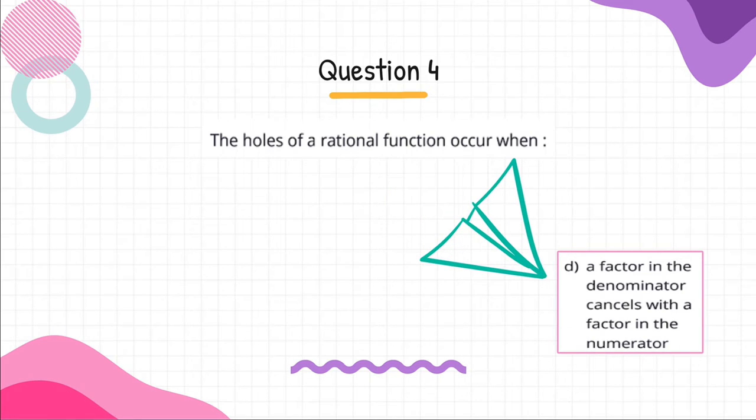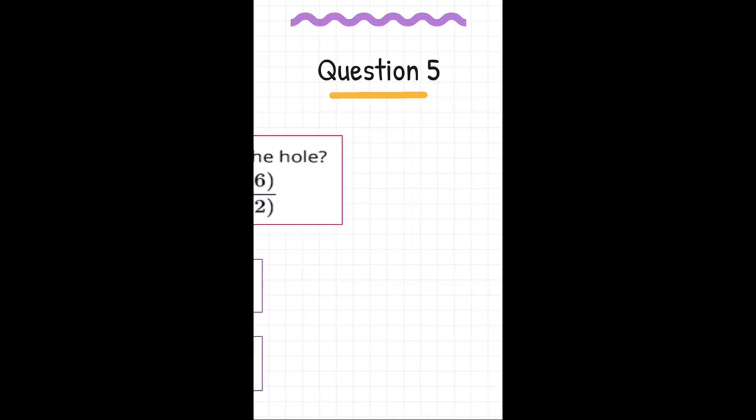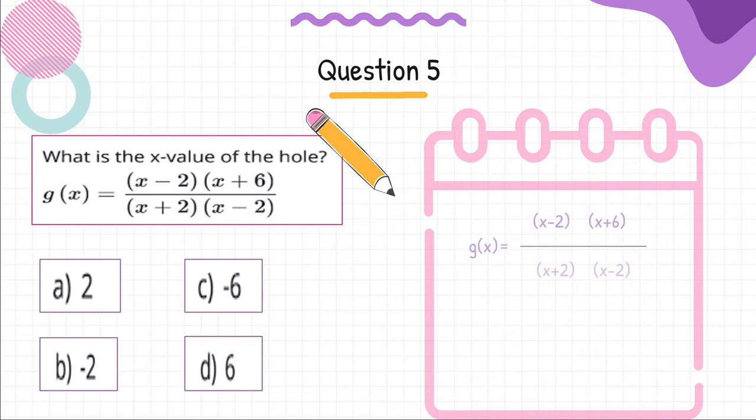D. A factor in the denominator cancels with a factor in the numerator. Correct.